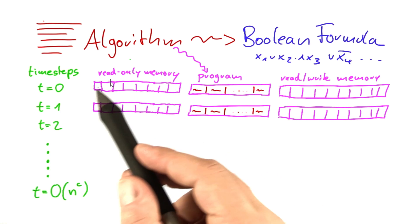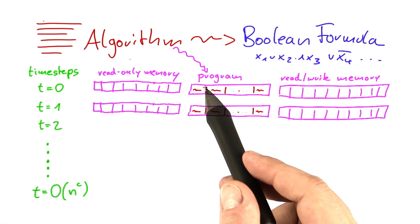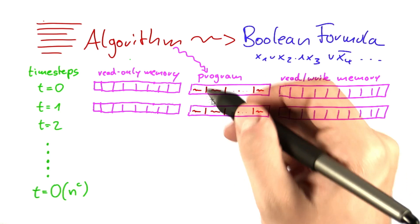So if you say at t equals 0, these are the contents of the read-only memory. This is, well, actually, we need another information. We also need to know where the program is at.